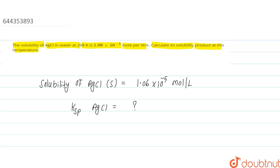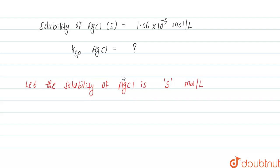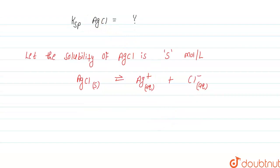Let the solubility of AgCl in water be s mole per liter. AgCl (solid) dissociates into Ag⁺ (aqueous) plus Cl⁻ (aqueous). This is the dissociation of AgCl into Ag⁺ and Cl⁻ in aqueous solution.